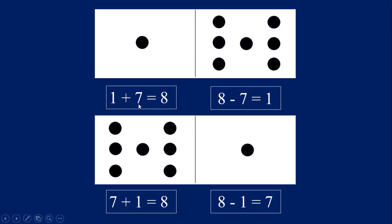Now let's try the next fact family. This fact family has the numbers one, seven, and eight in it. Let's say our addition and subtraction problems. Are you ready? One plus seven equals eight. Eight minus seven equals one. Switch the order — seven plus one equals eight. Eight minus one equals seven.